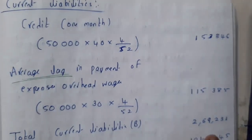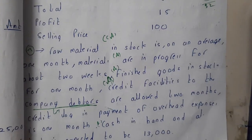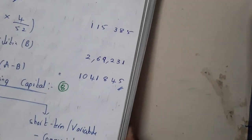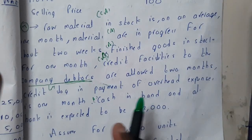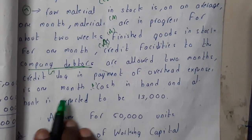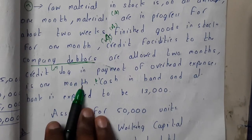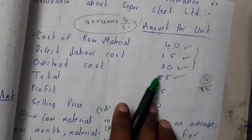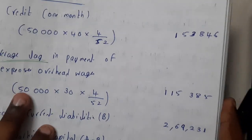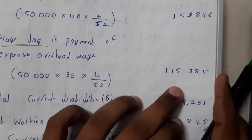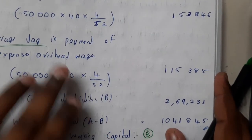Now let us calculate current liabilities. The first liability is the credit lag in payment of overhead expenses for one month. Overhead cost is 30 rupees, so: 50,000 into 30 into 4 by 52, giving 1,15,385 rupees.